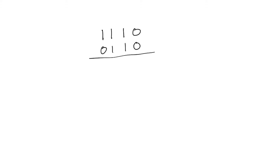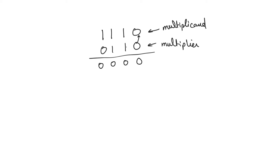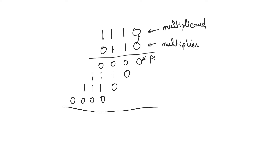Understanding how the arithmetic works guides the hardware. This operand is called the multiplier and this operand is called the multiplicand. For the first bit of the multiplier, we multiply that bit by every single bit in the multiplicand. So a zero multiplies everything to produce four zeros, and a one multiplies the multiplicand to produce 0111. Each of these bits is called a partial product, and each of these rows is called a summand. When we add these together we produce the result, which is called the product.